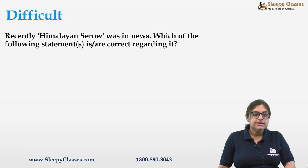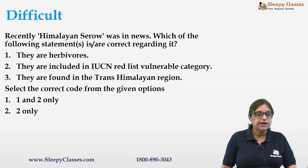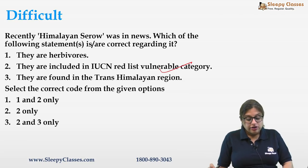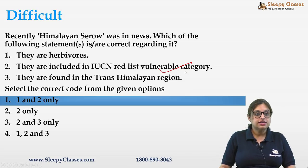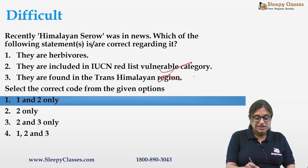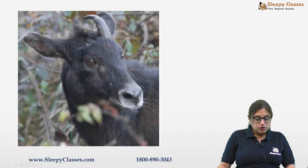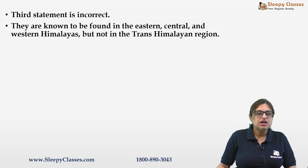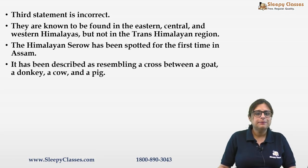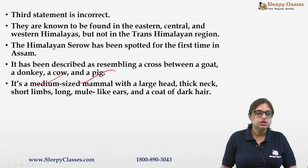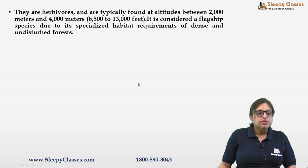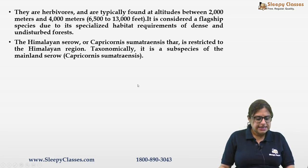Next question is about Himalayan Serow. Statements: they are herbivores; included in IUCN Red List vulnerable category; found in the trans-Himalayan region. The correct answer is one and two only — it is not found in the trans-Himalayan region but in the Himalayan region. The Himalayan Serow looks like a cross between a cow and a goat (or donkey, cow, or pig) and was spotted in Assam. IUCN status is vulnerable (previously near threatened, meaning numbers have decreased). Schedule 1 of WPA; CITES Appendix 1.